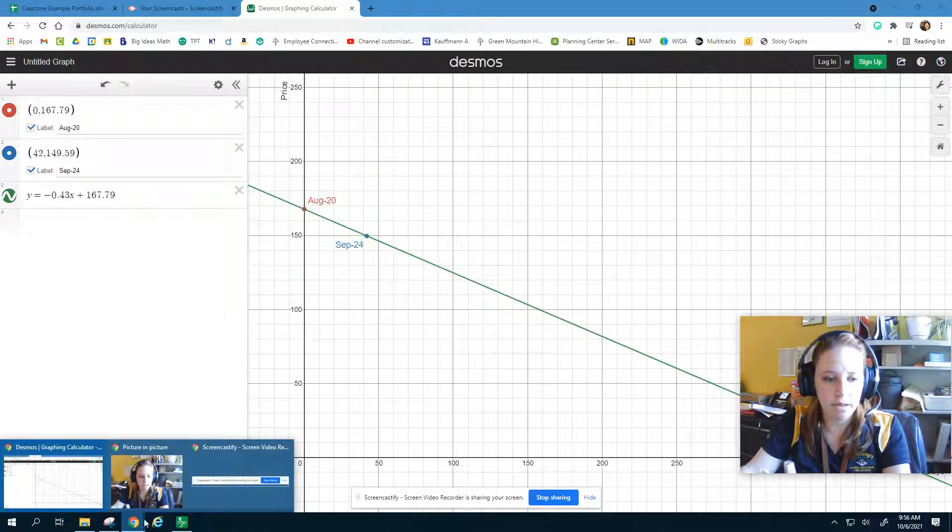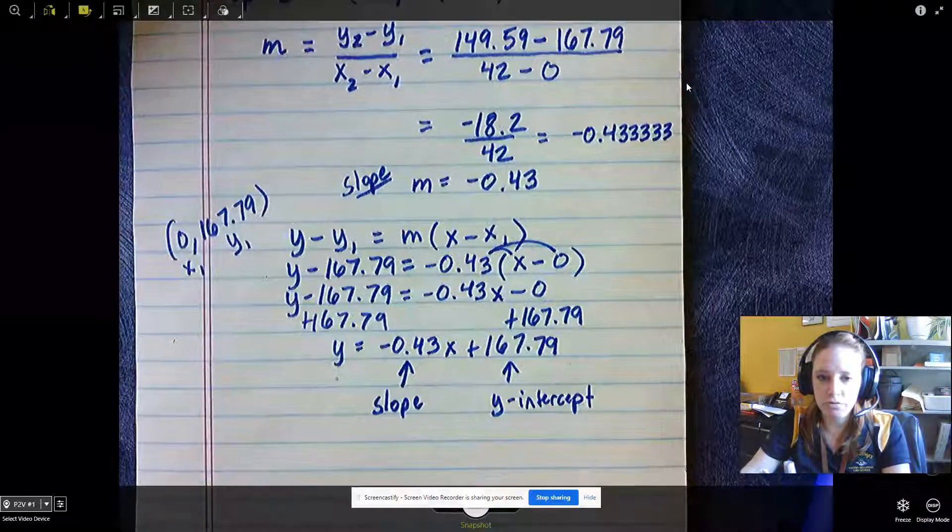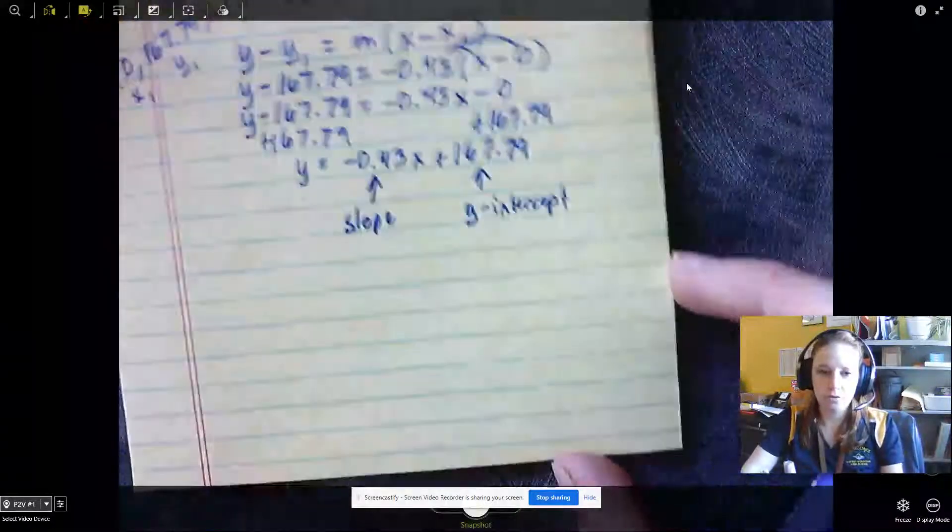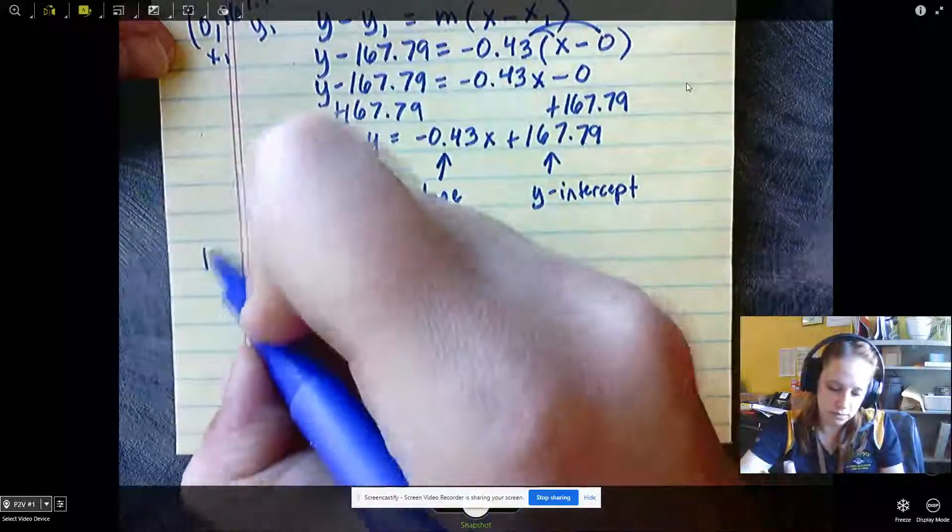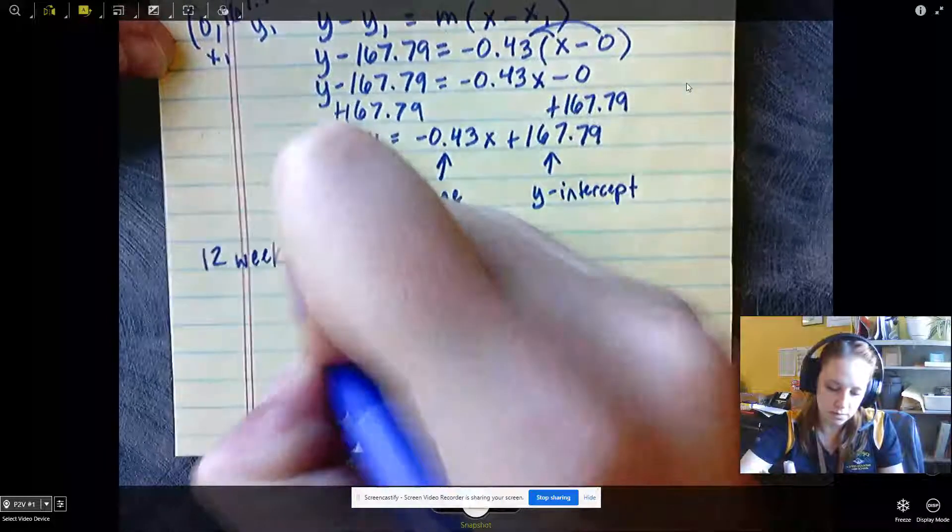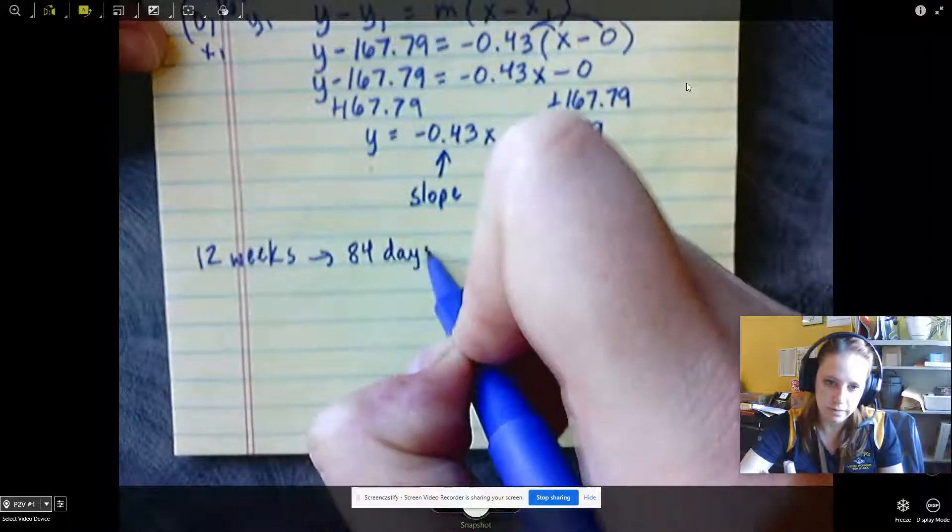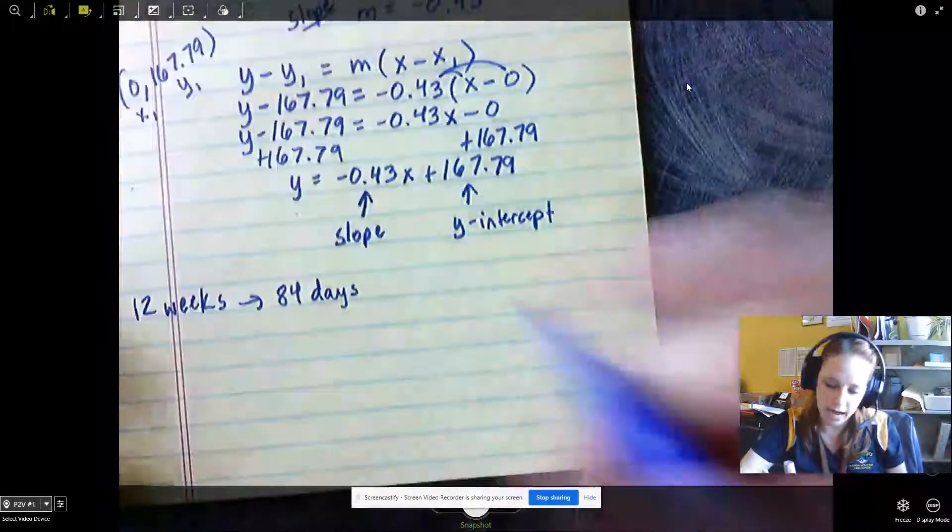Finally, I'm going to come back to my document camera. We're going to use this equation to make a prediction for our 12-week mark. So 12 weeks is 84 days. We're going to plug 84 in for x.